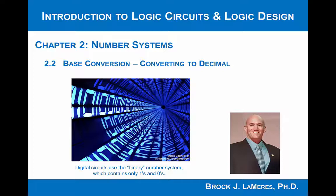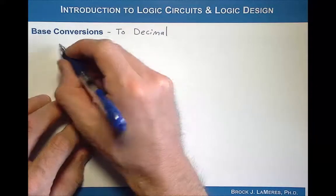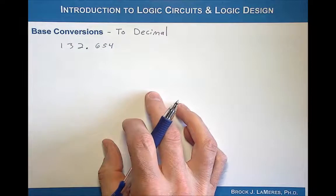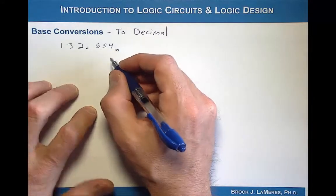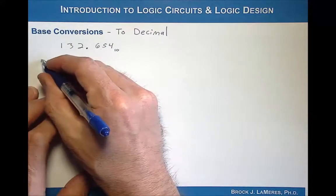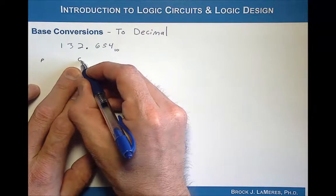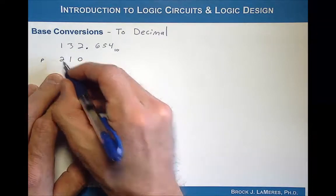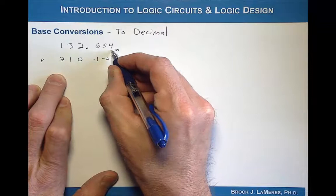Last time we talked about this whole concept of a positional number system where you might have a number such as 132.654, and I'm going to put a base 10 as a subscript down there just so that we know what base we're talking about now that we have multiple bases. I want to write down the position variable. The position is defined as a value of 0 at the numeral position to the immediate left of the radix point, incrementing by 1 going to the left and decrementing by 1 going to the right.